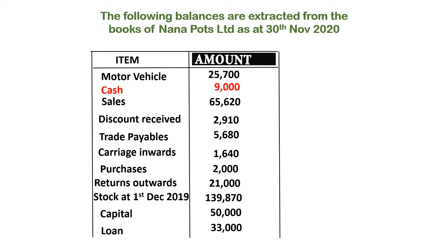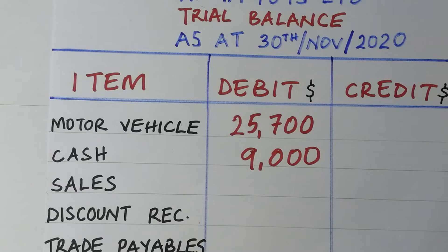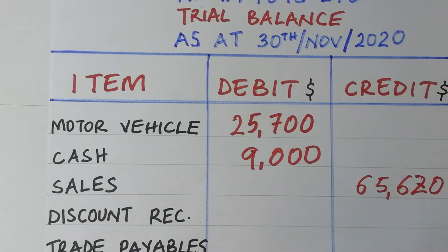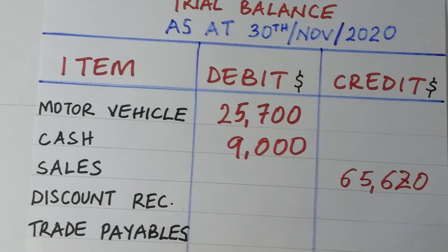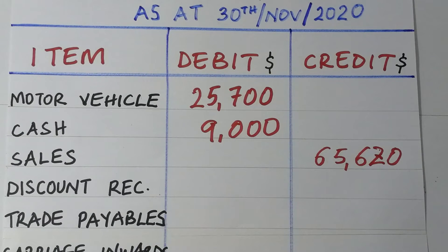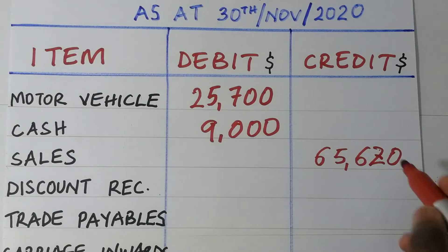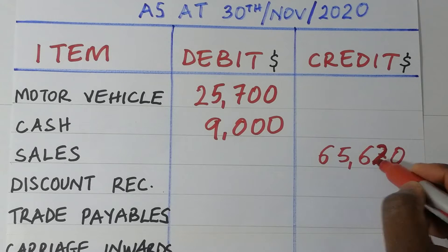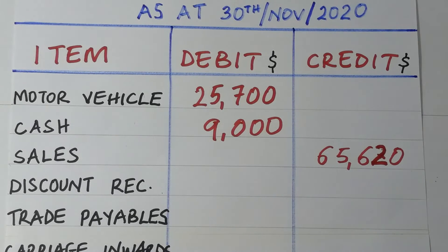Then we have sales. The value for sales is $65,620. Sales have a credit balance, so we are putting $65,620 on the credit side of the trial balance.